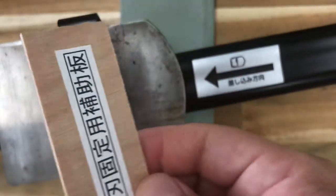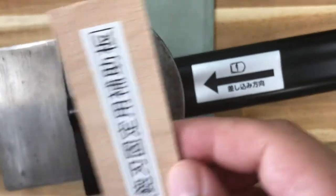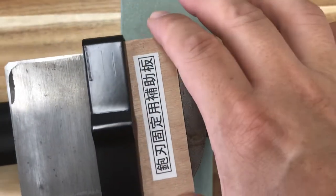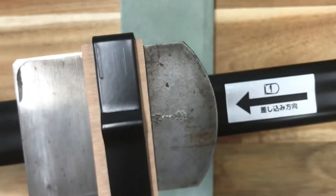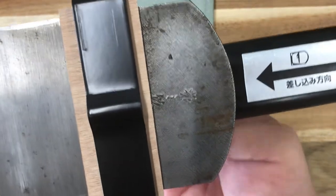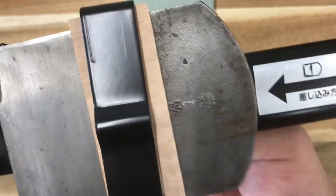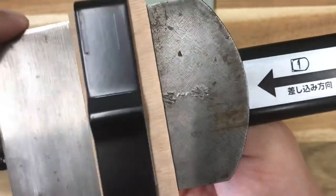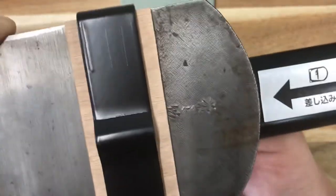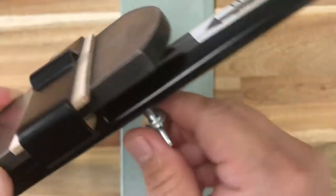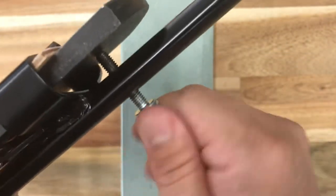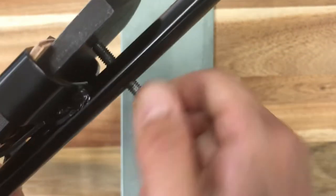we recommend using this kind of veneer-made spacer, put it into the slit, and then tighten the screw to fix the blade firmly.